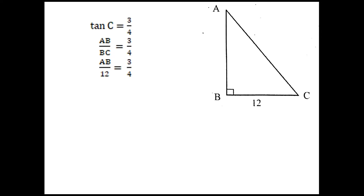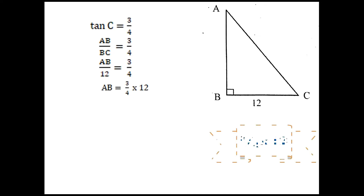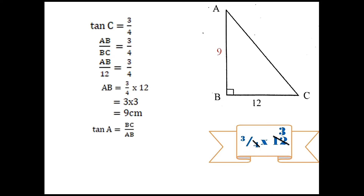So we can write AB by 12 equals 3 by 4. Now AB equals (3/4) × 12. Since 3 × 4 = 12, we can cancel, and we get 3 × 3. So AB equals 9 cm. Now we have to find tan A. Tan A means opposite side by adjacent side, where the opposite side of angle A is BC and adjacent side is AB. So tan A equals BC by AB, which is 12 by 9. Simplifying, 4/3. So tan A equals 4/3.